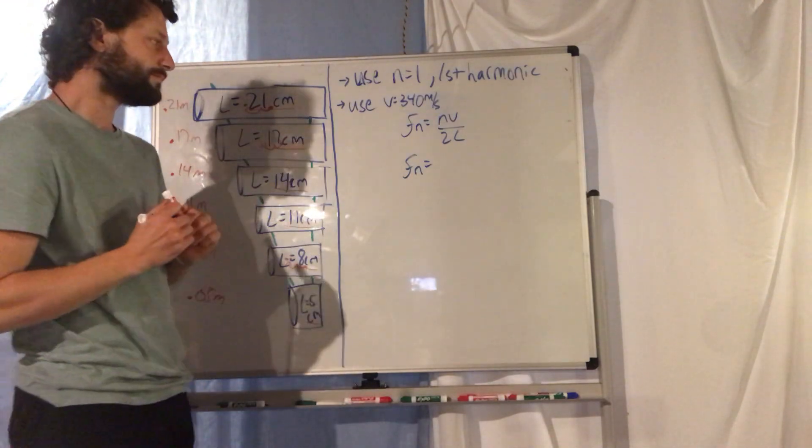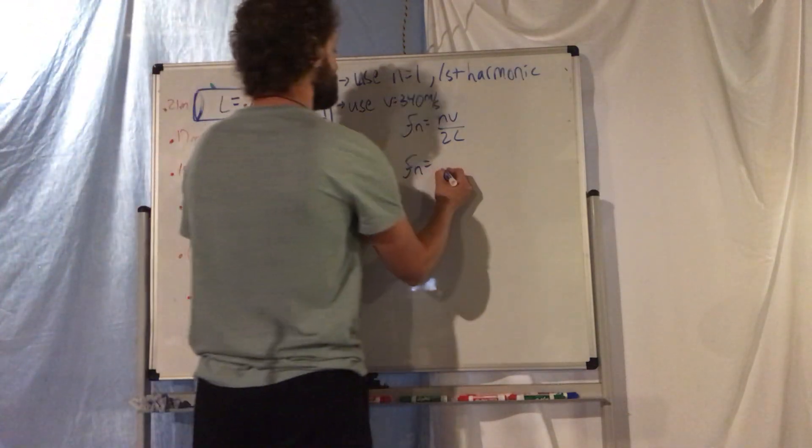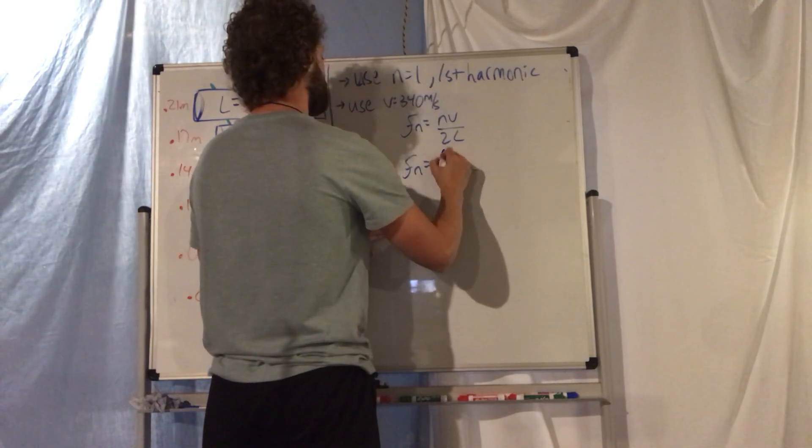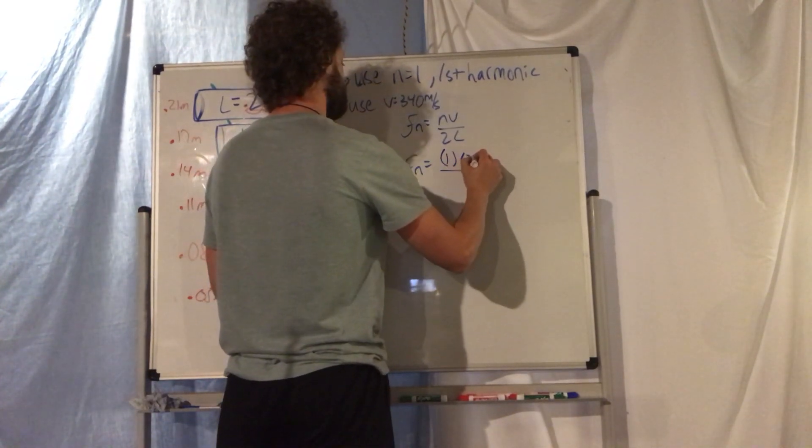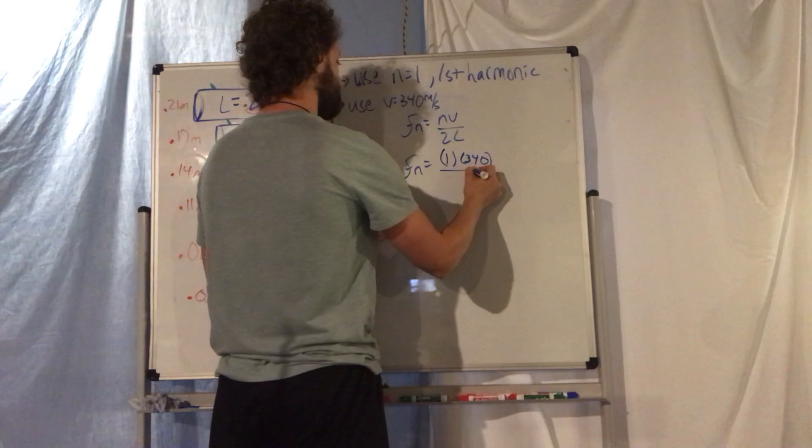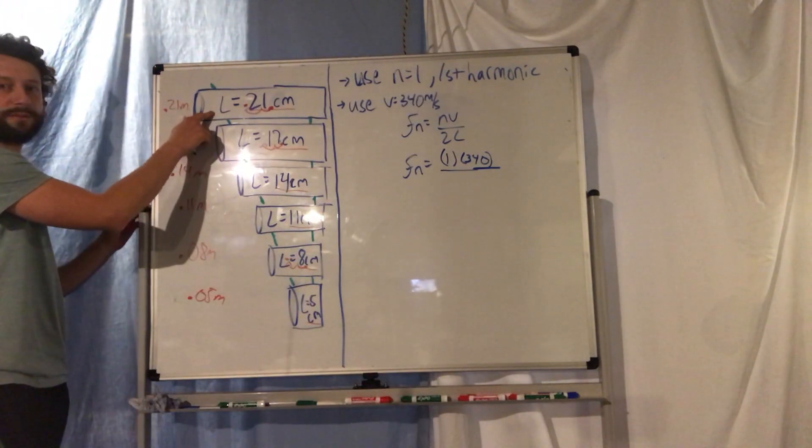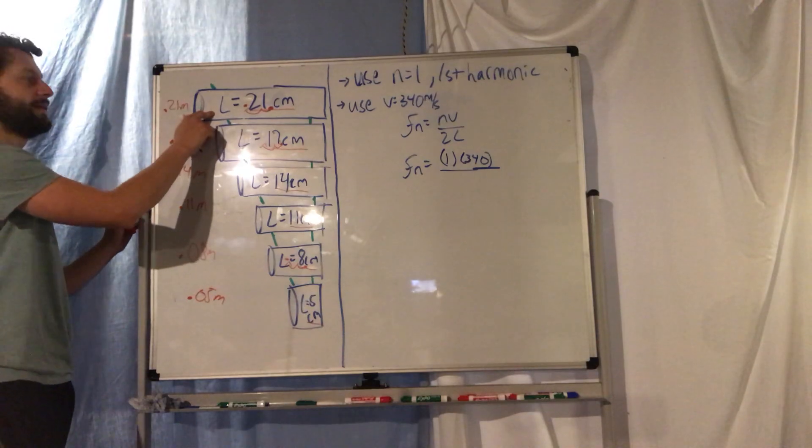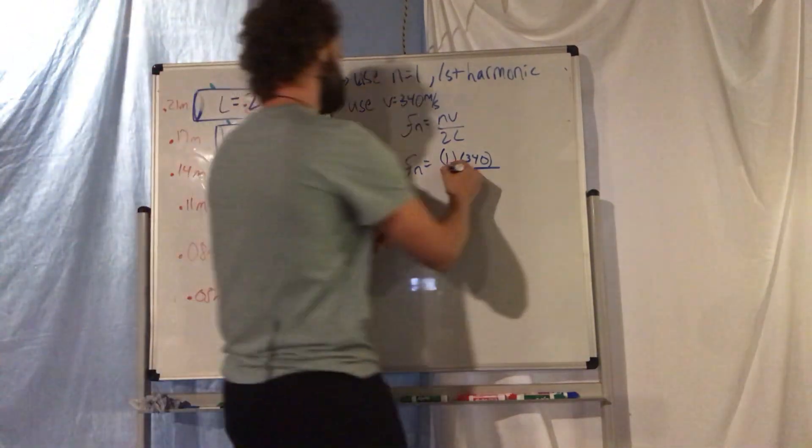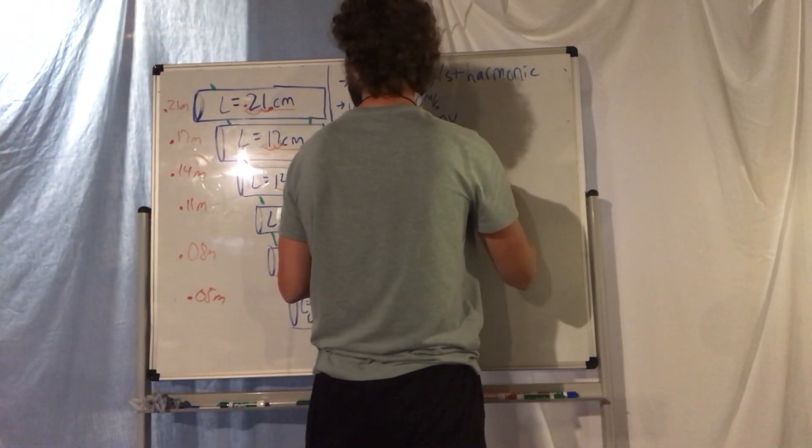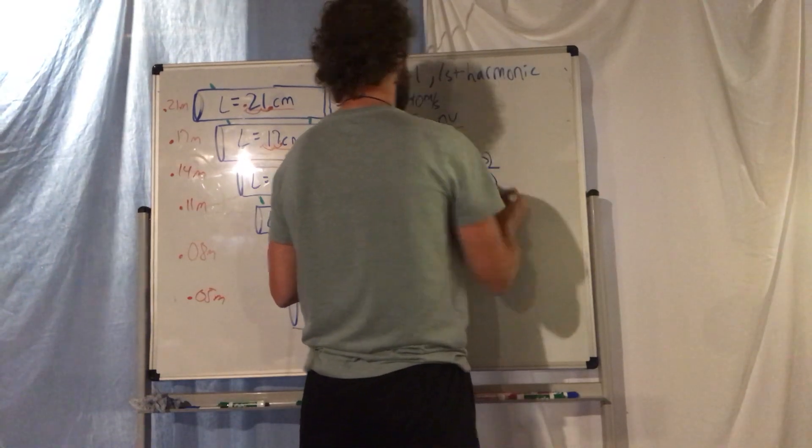Also you're gonna use 340 meters per second for your velocity, and I looked that up for your xylophone tubes. So on the top it'll be 1 times 340, and this example I'll use this for my long tube here. So I'm gonna use that length, 2 times 0.21.